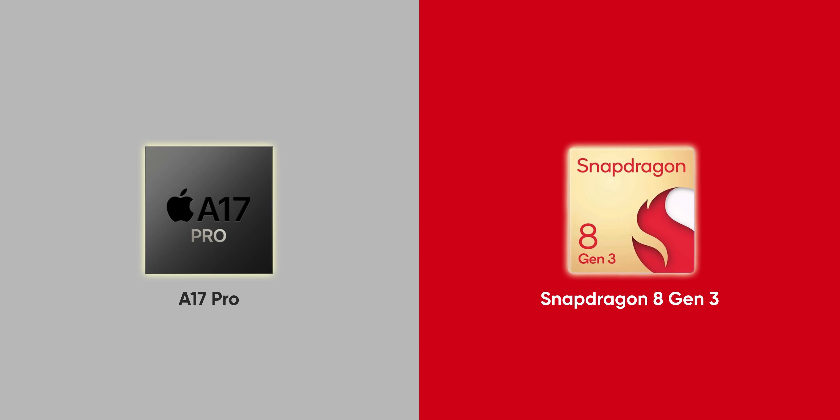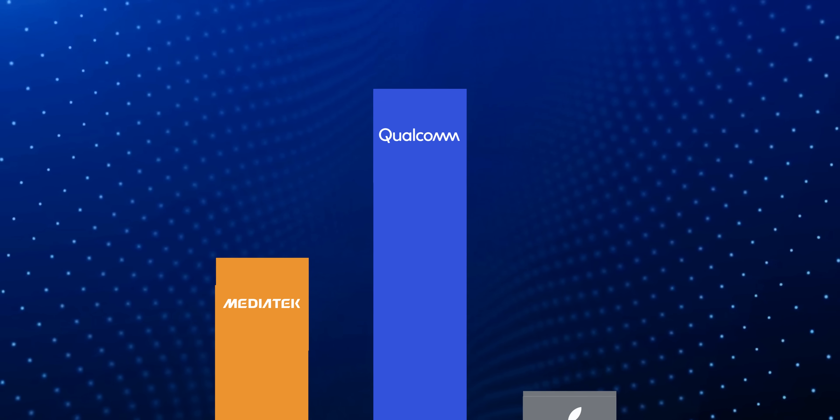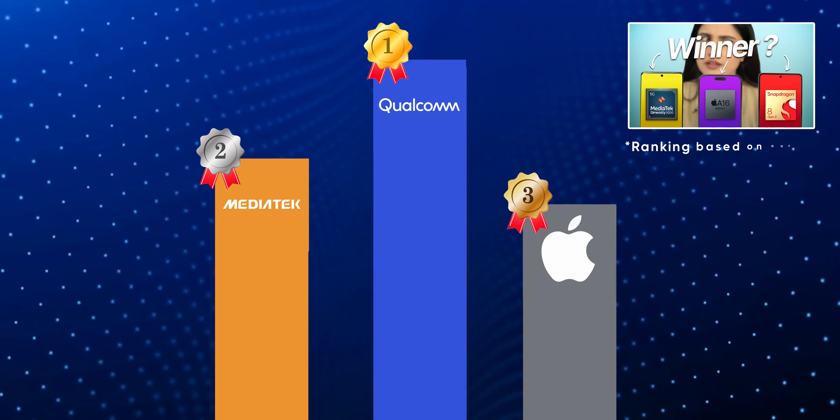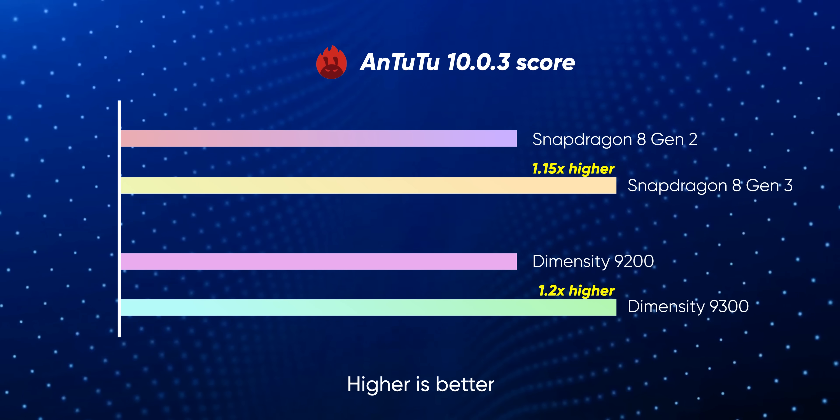Hey everyone, it's me Pratima, and I am really excited about today's video because I will be comparing all the flagship processors that will power high-end phones this year, which includes Apple's A17 Pro, Qualcomm Snapdragon 8 Gen 3, and the Dimensity 9300 from MediaTek. All three of these chip makers have really stepped up their game this time.